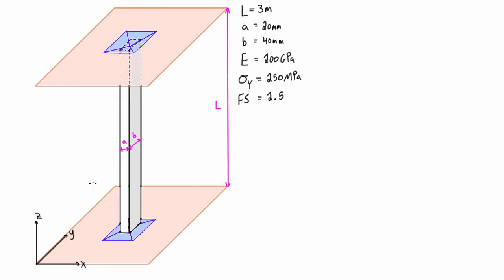What we need to do first is figure out our effective length. Considering both planes it can buckle in, it's considered pinned in both directions. So our effective length, no matter how we look at it, is just the actual length of the column — that comes from the pin-pin connection. For a pin-pin connection, effective length equals the actual column length.